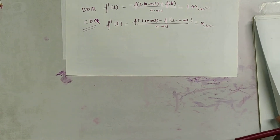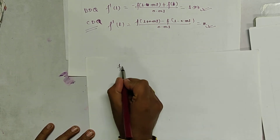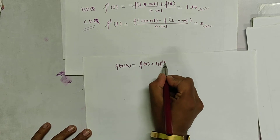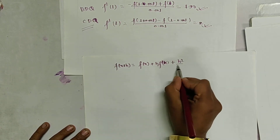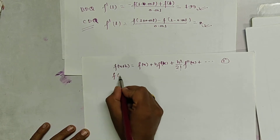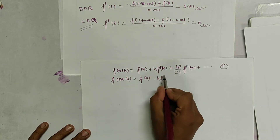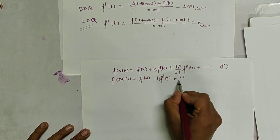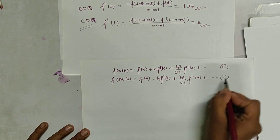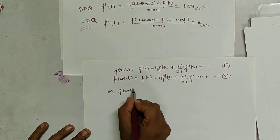We get 2.001 by forward difference, 1.999 by backward difference, and 2 by central difference. Since the exact value of f'(1) is 2, the central difference quotient is much more accurate. Now let us derive the formula for the second order derivative. From the Taylor series: f(x+h) equals f(x) plus h·f'(x) plus h²/2!·f''(x) plus dot dot dot, and f(x-h) equals f(x) minus h·f'(x) plus h²/2!·f''(x) plus dot dot dot.